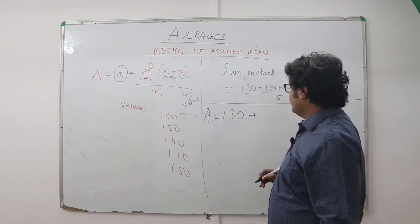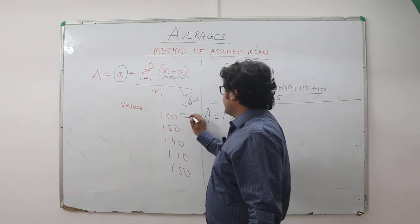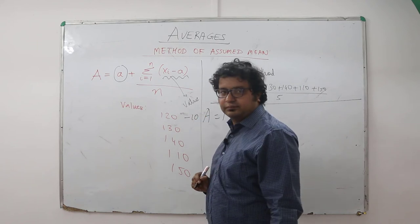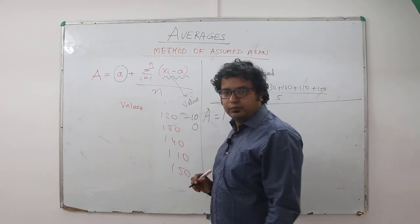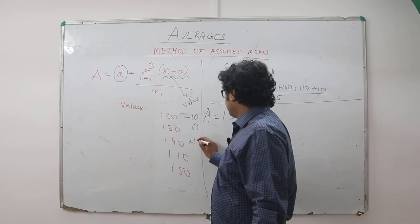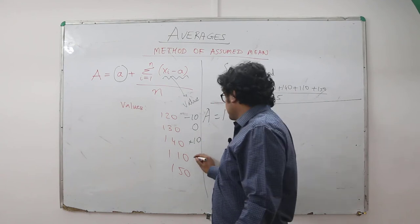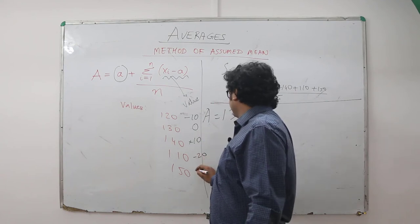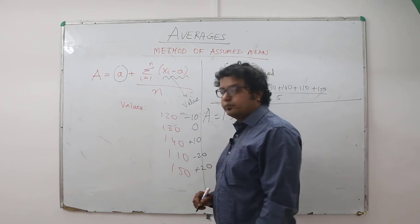So if I take this as 130: 120 is 10 less, 130 is 0, 140 is 10 more, 110 is 20 less, and 150 is 20 more.